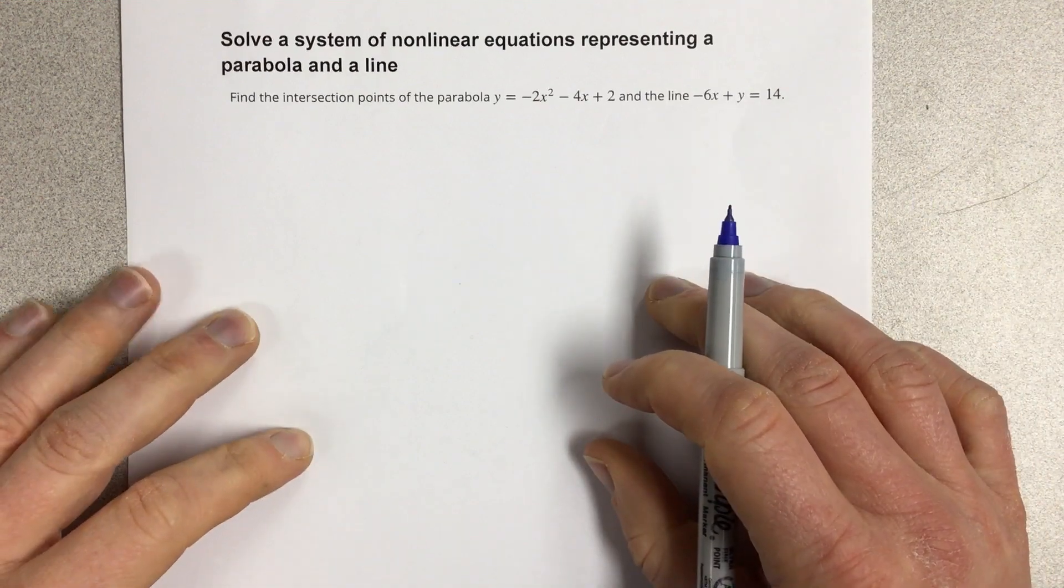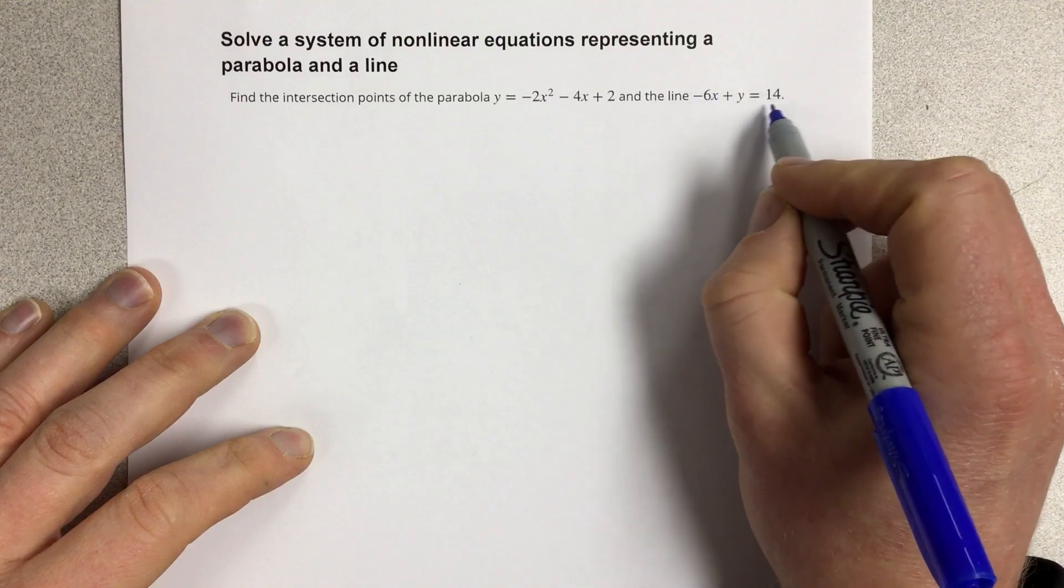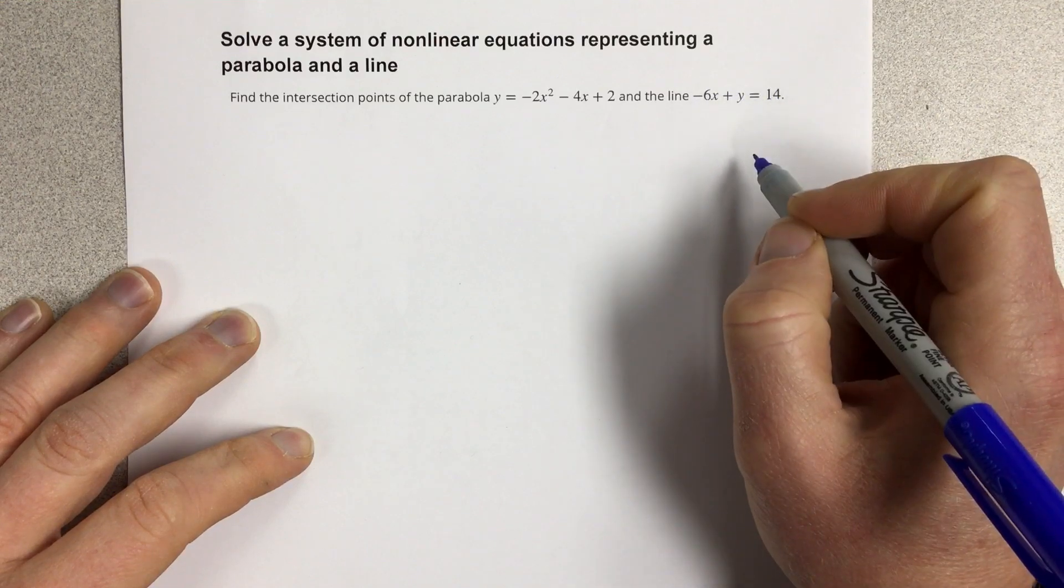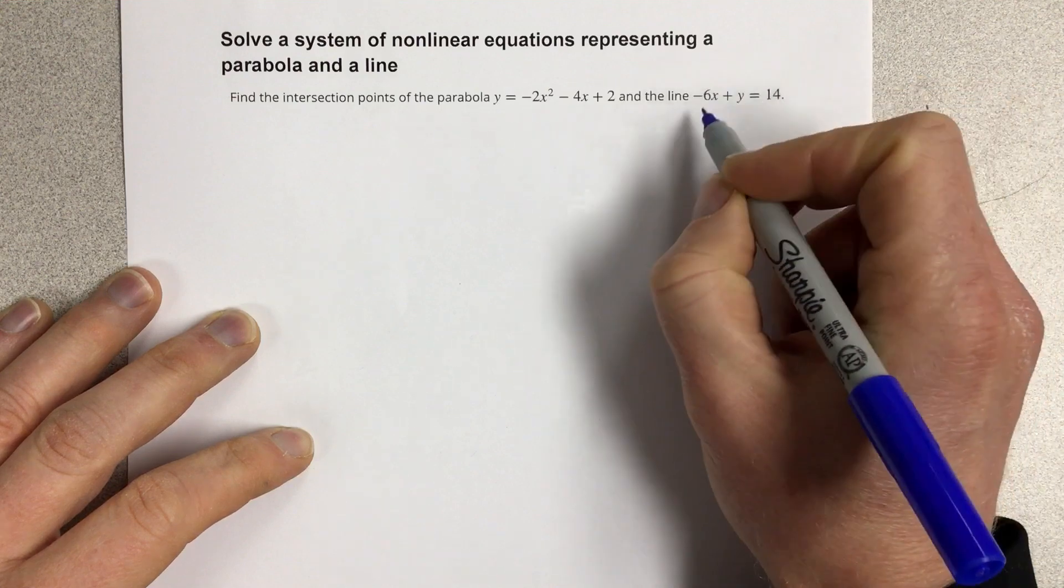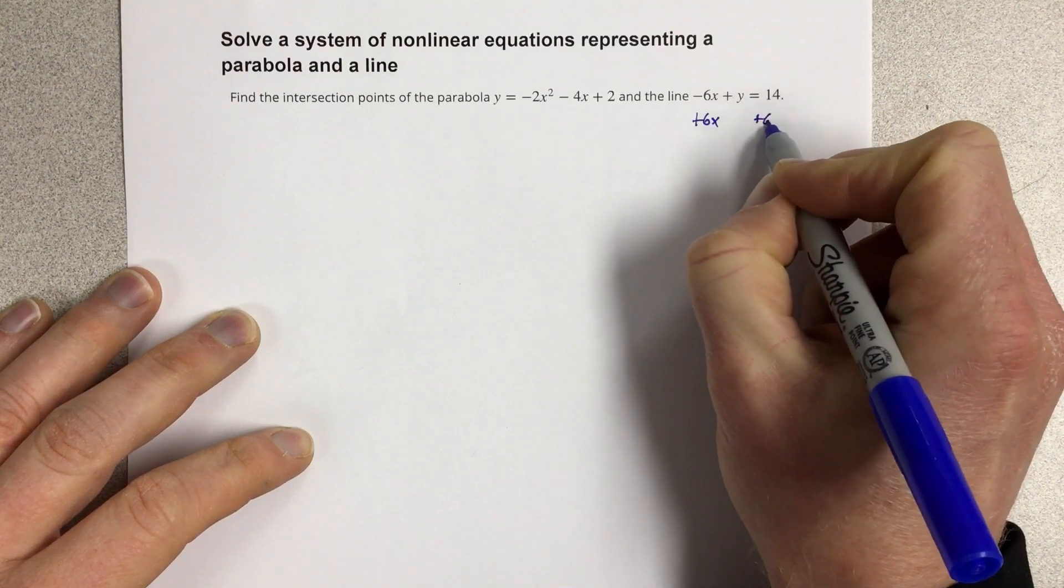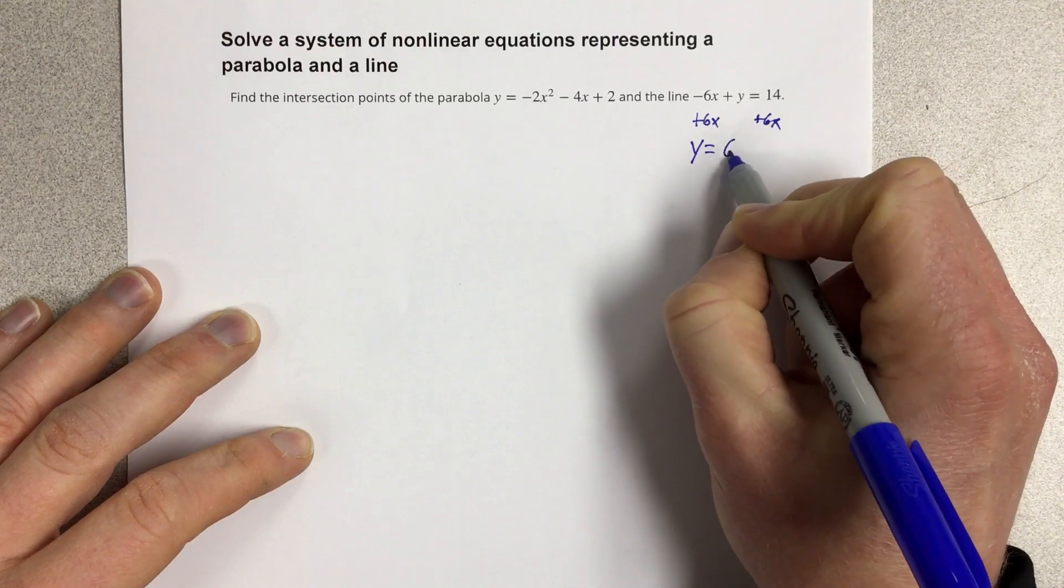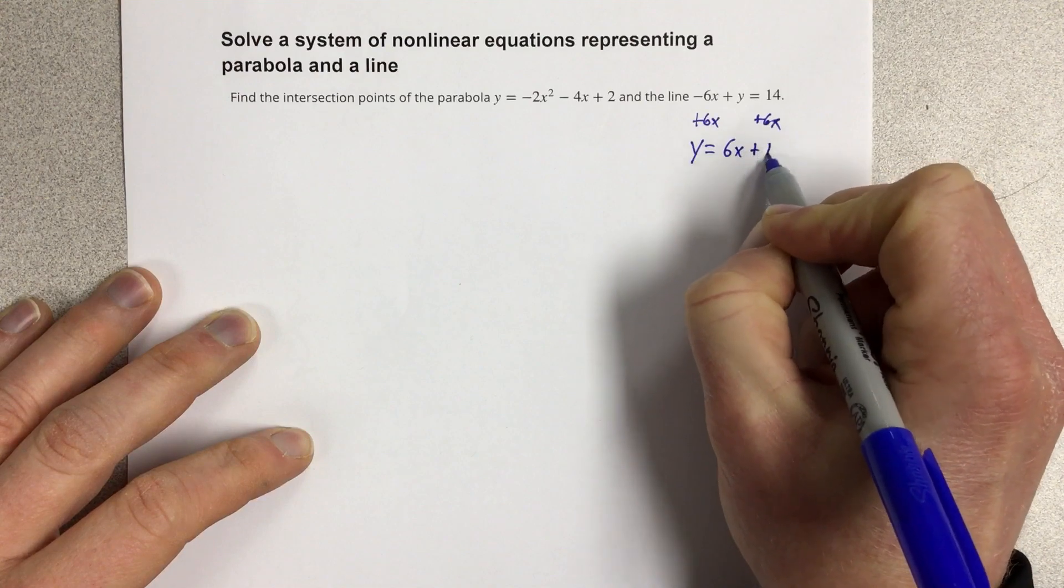So the first thing we're going to do is use substitution. We're going to get this equation in terms of y, into slope-intercept form by adding 6x to both sides. Adding 6x to both sides gets you y equals 6x plus 14.